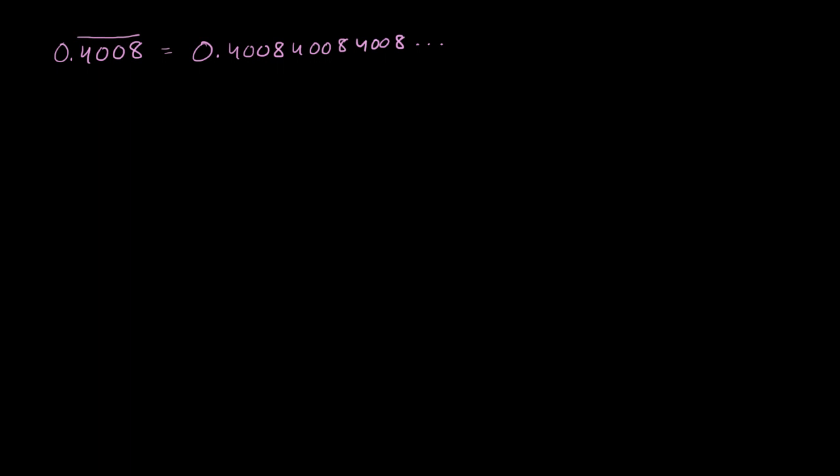So I'm assuming you've given a go at it. For each term of my infinite series, I'm going to represent one of these repeating patterns of 4008. So for example, I will make this 4008 my first term. This could be viewed as 0.4008. Then I could make this 4008 my next term, which represents 0.00004008.